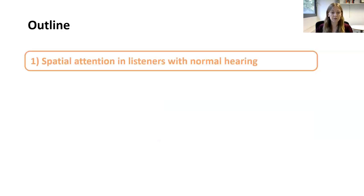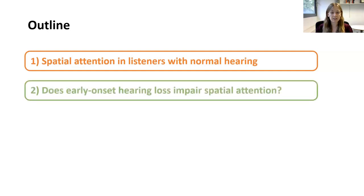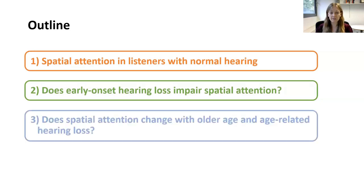First I'll talk about spatial attention in listeners with normal hearing. Then I'll describe some work we did with children who had early onset hearing loss to examine how hearing loss at an early age affects spatial attention. Then I'll skip to the other end of the lifespan to examine how spatial attention changes with older age and whether it's affected by age-related hearing loss.